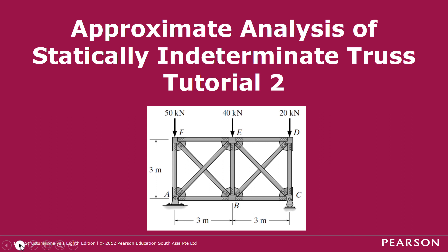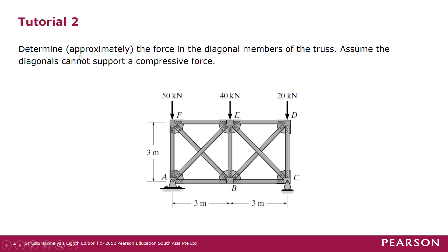In this particular example, you are asked to determine approximately the force in the diagonal members of the truss. We assume that the diagonals cannot support a compressive force, meaning that the diagonal members FB, EA, EC, and DC — if we find that any of these members is in compression, then we set it as a zero force member.